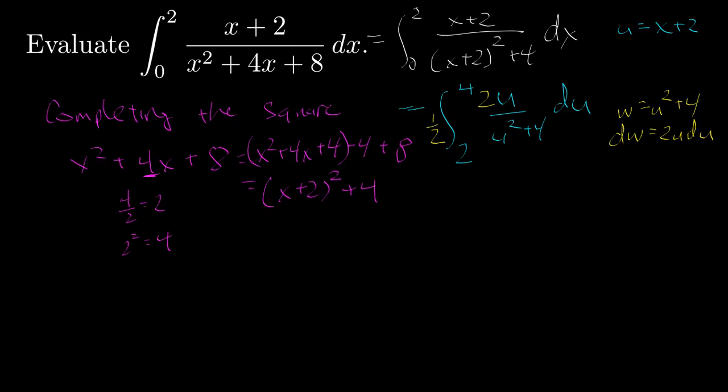And now we can do the substitution. And with respect to this final variable, we have dw, that's 2u du, divided by w. And we have the 1 half outside, and we have new limits of integration.